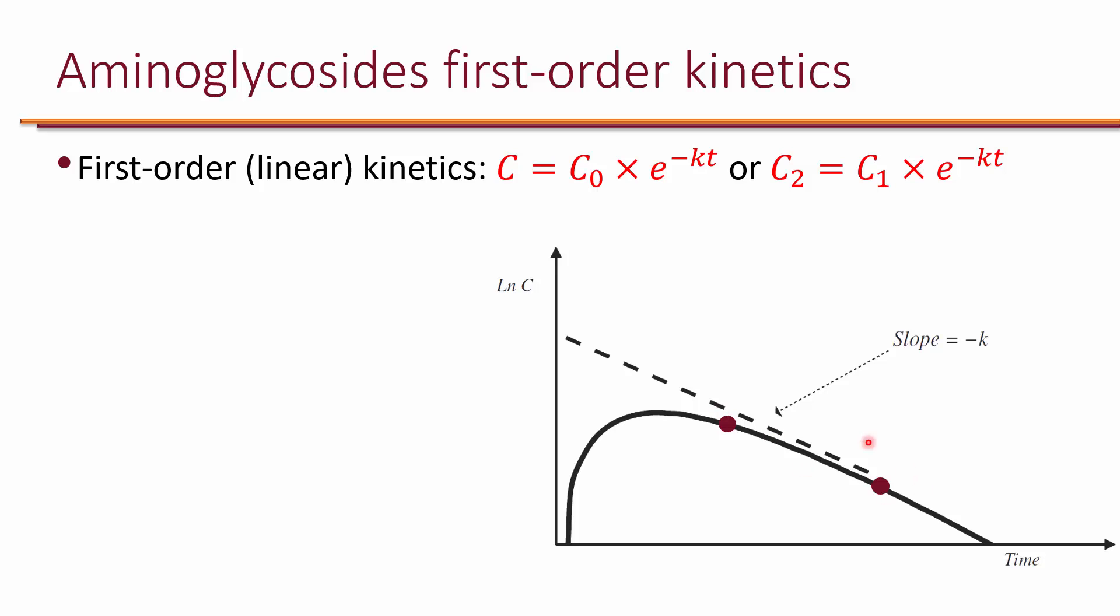The slope of this linear line is actually negative K, and K is the elimination constant. So we can use the famous equation C equals C naught times e to the negative KT. In other words, C2, or the final concentration, equals C1, or the initial concentration, times e to the negative KT. And the T is the time it takes to go from C1 to C2.